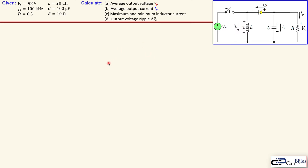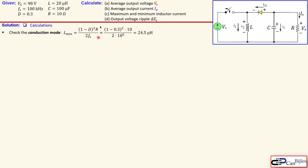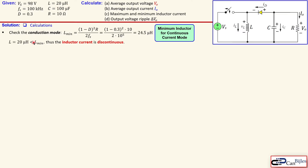We have four unknowns. We need to check whether the conduction mode is discontinuous or continuous. The first part of the calculations starts with the conduction mode. This is the minimum inductor value needed for continuous current mode operation. We know our duty cycle, the resistor, and the switching frequency. Substituting into this formula gives 24.5 microhenries. Since we have 20 microhenries, which is smaller than 24.5 microhenries, the inductor current is discontinuous.